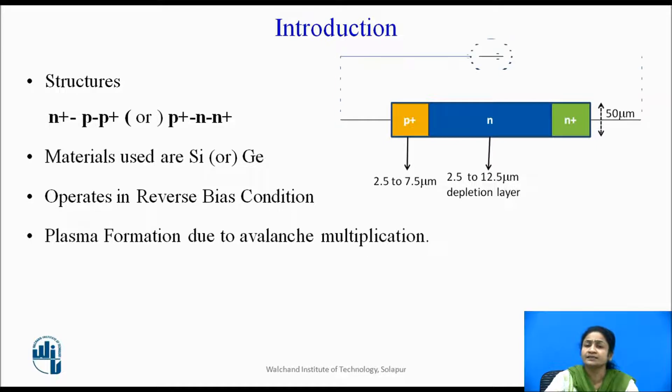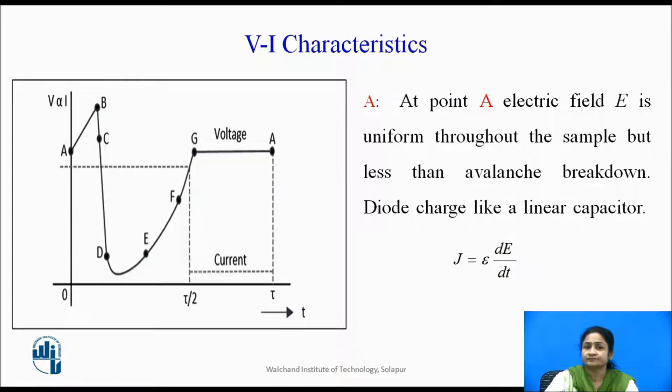To operate this diode, current pulses are applied. Let us see by the V-I characteristics how the operation of this diode takes place. This figure represents the V-I characteristics of the TRAPATT diode.